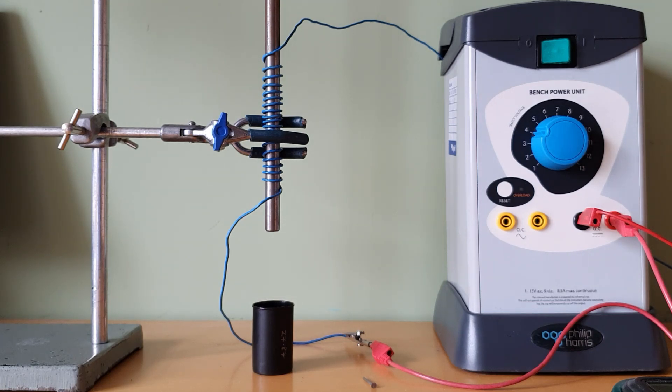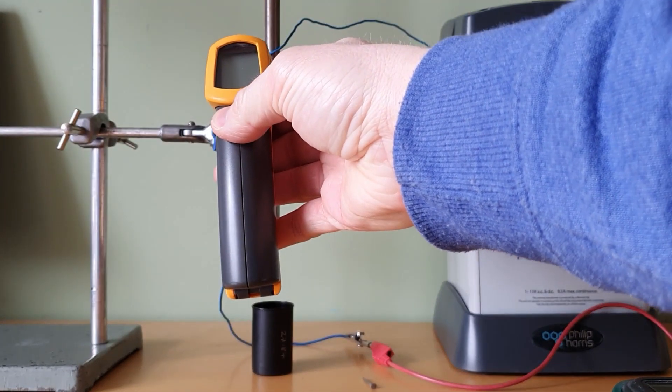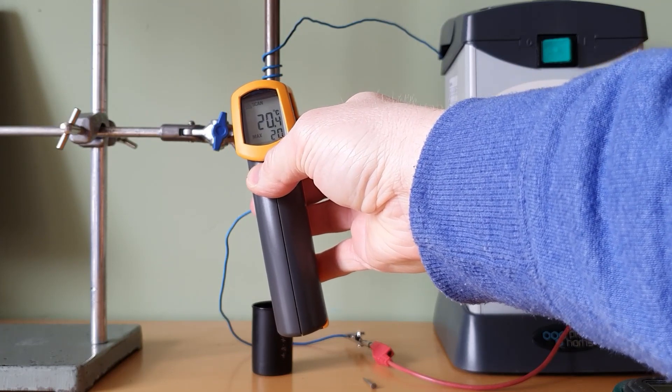Also if too high a current goes through the coil it will heat up. With the power supply turned off the temperature of the coil is about 20 degrees Celsius.